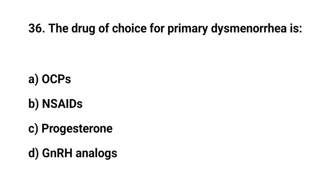Question No. 36. The drug of choice for primary dysmenorrhea is? Right answer is B: NSAIDs.